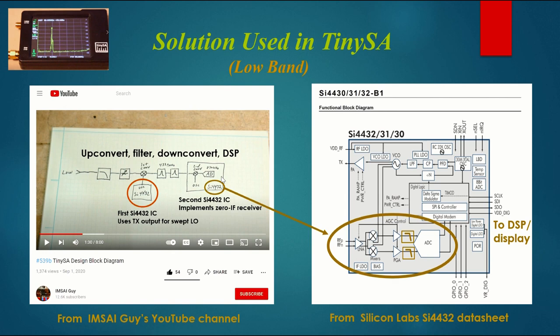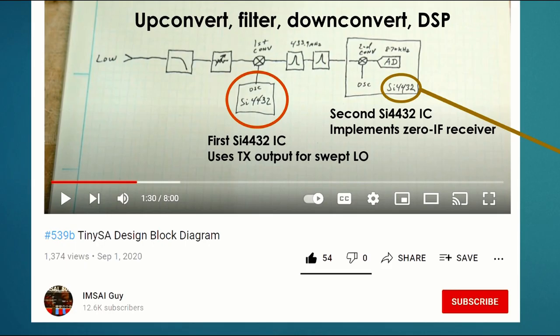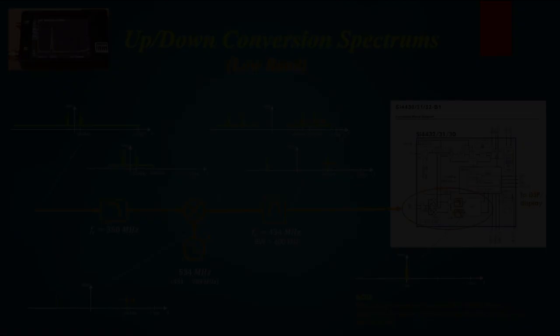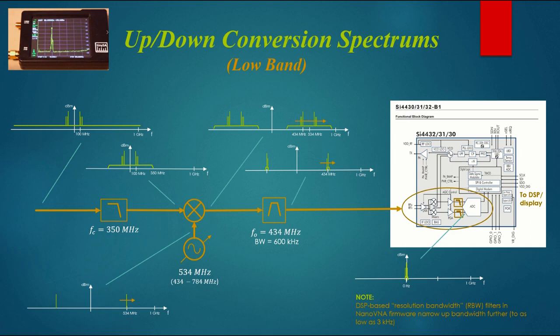That's the down conversion from 434 down to essentially baseband. That's done with some chips called SI4432. This is the Silicon Labs data sheet. And in this data sheet, you can see the direct conversion receiver design with two mixers using quadrature LO. What I'm going to do next is take you through this up conversion and down conversion in a lot more detail.